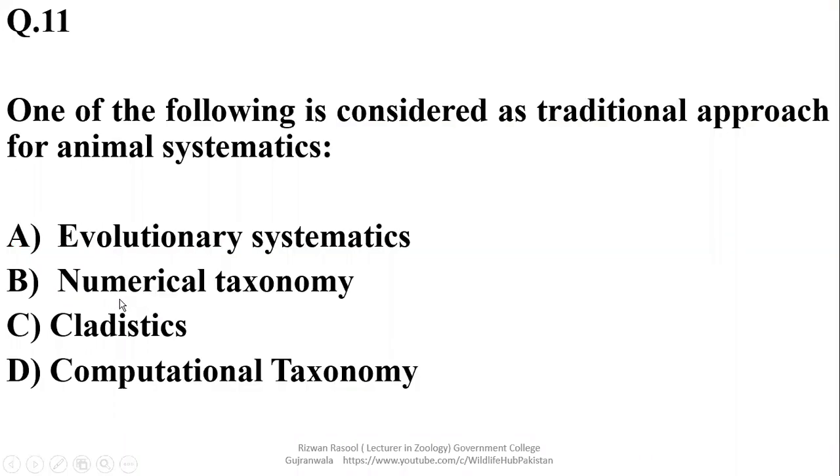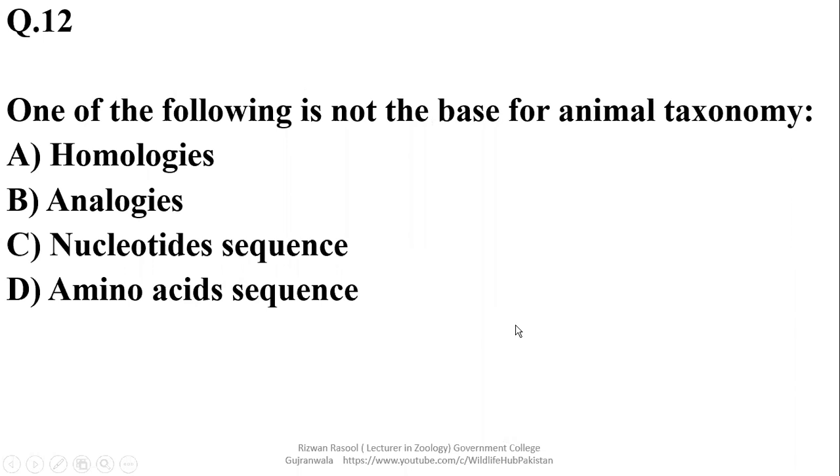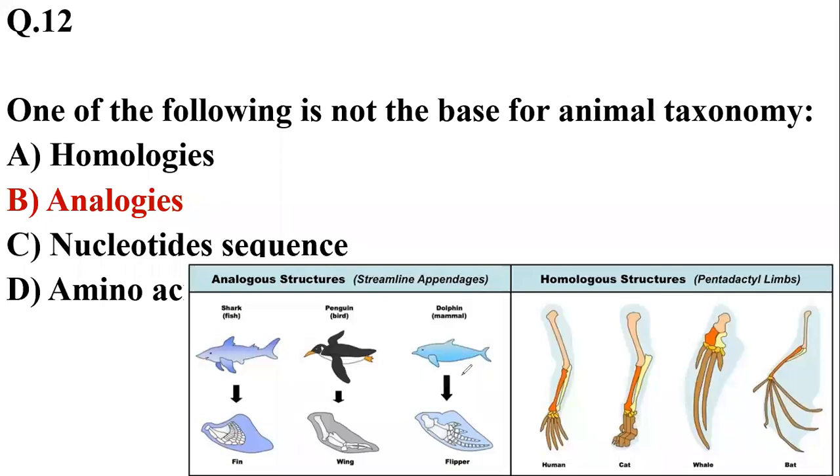And numerical taxonomy, as far as numerical taxonomy is concerned, it makes use of numerical features, facts and figures. One of the following is not the base for animal taxonomy: Animal they are classified on the basis of homology, nucleotide sequences, amino acid sequences sometime. But analogies is not a feature used in animal classification. As we know that those structures which are analogous, such as penguin wings, shark's fin, and whale flipper, they are all used for swimming. They are having same function but different basic structure and different ancestors. That's why they cannot be used to find out the common characteristic or common ancestors. On the other hand, homologous structures they are used to find out the common ancestry, so right option in this case is analogous.